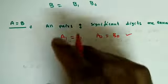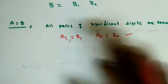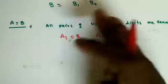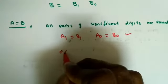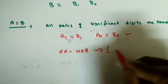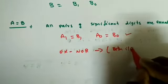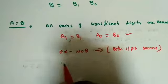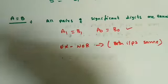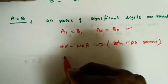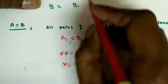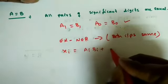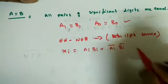In digital systems values are ones and zeros. The gate that tells both numbers are equal is the XNOR (exclusive NOR) function, also called an equality detector. We give the logic expression for the ith position as Xi = Ai·Bi + Ai_bar·Bi_bar.